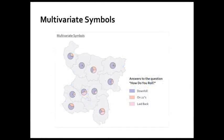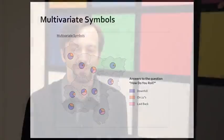Finally, there's multivariate symbols. In this particular case, I'm looking at answers to this very important survey about how do you roll. Some people roll downhill, some people roll on 22s, and some people roll laid-back style — Lower Mapistan is a diverse place. These multivariate symbols are just pie charts, though you could use bar charts, and there are tons of other methods possible. Maybe you could think of some and post your own ideas in the forums, and let me know how it is that you roll.